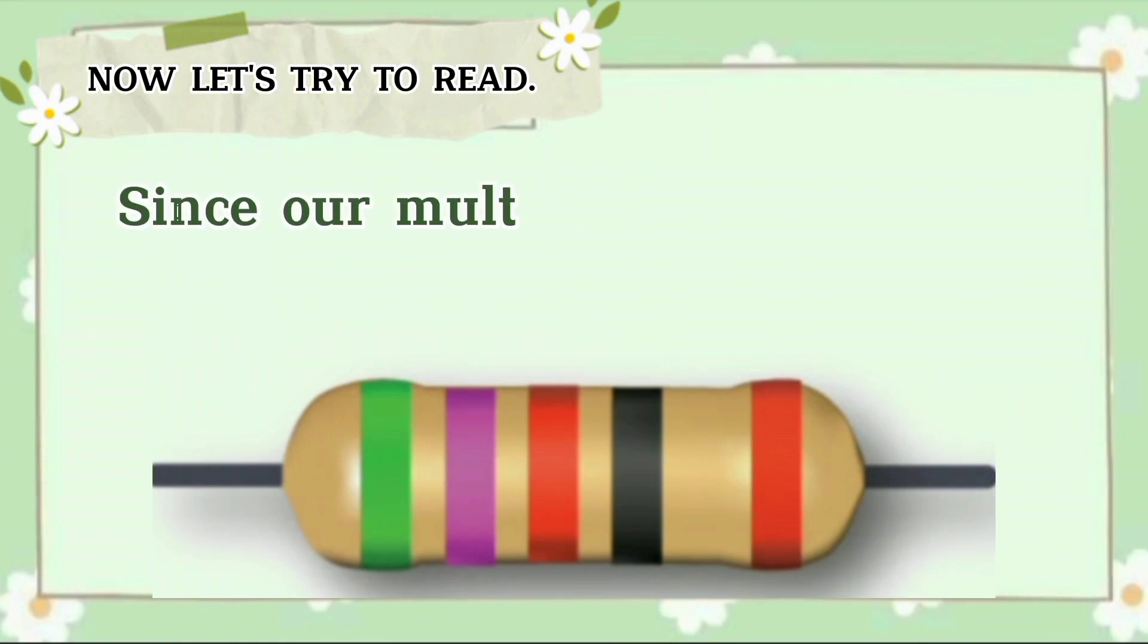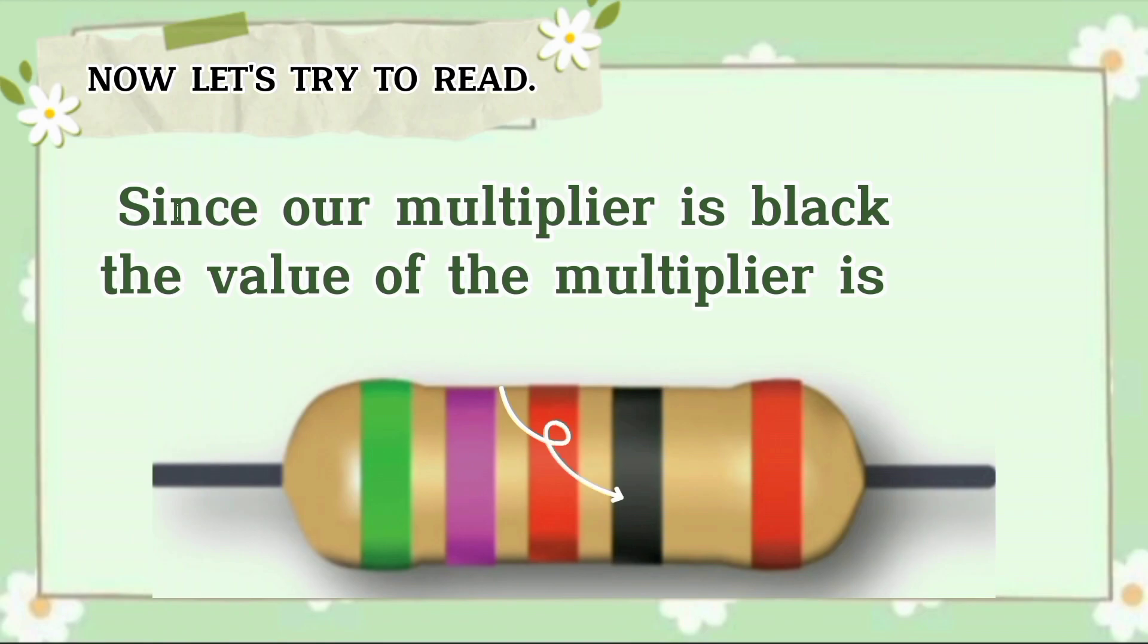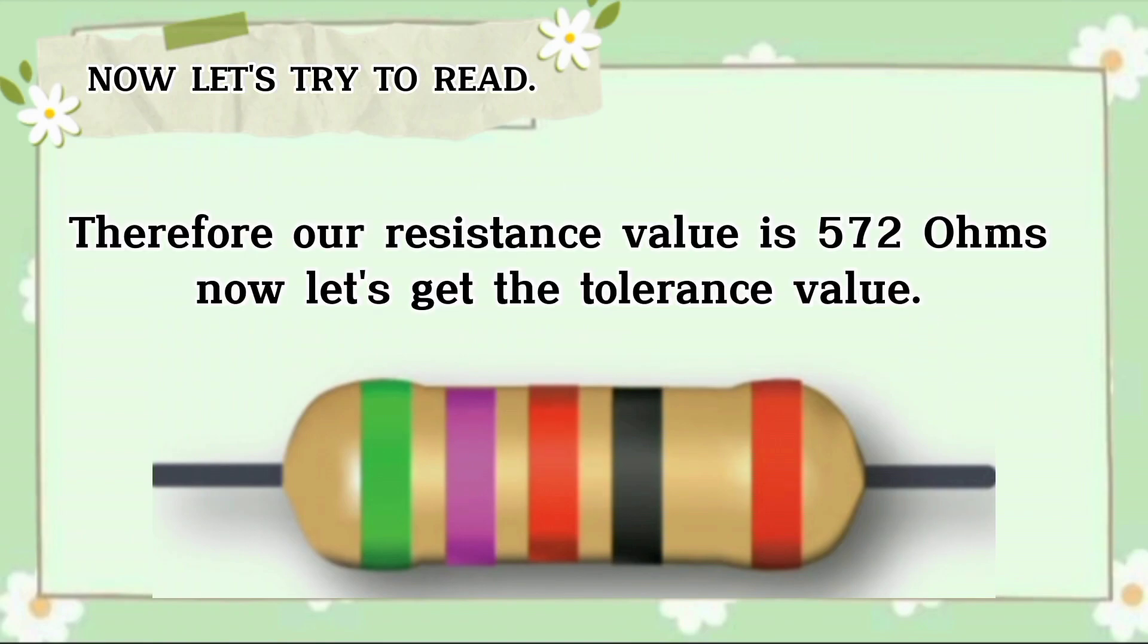Since our multiplier is black, the multiplier value is times 1. Therefore, our resistance value is 572 ohms.